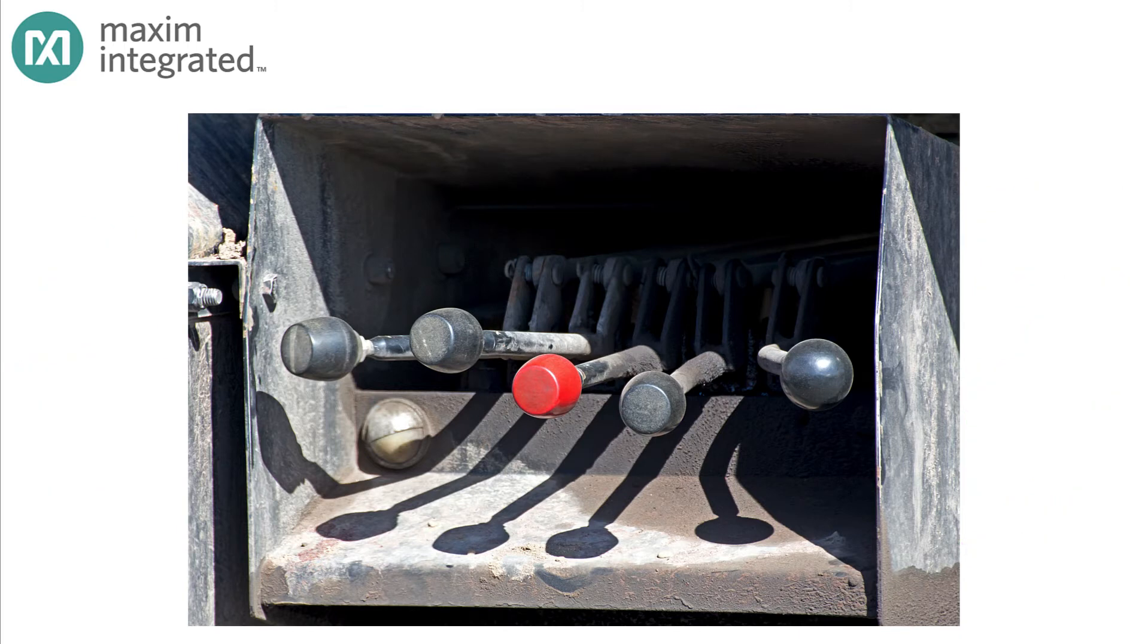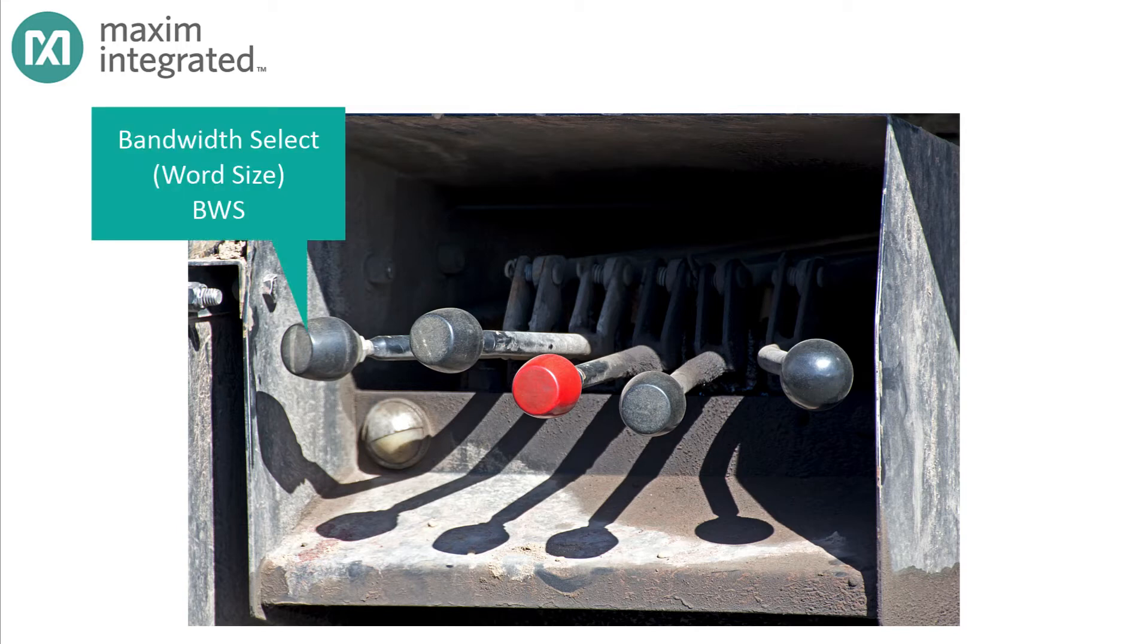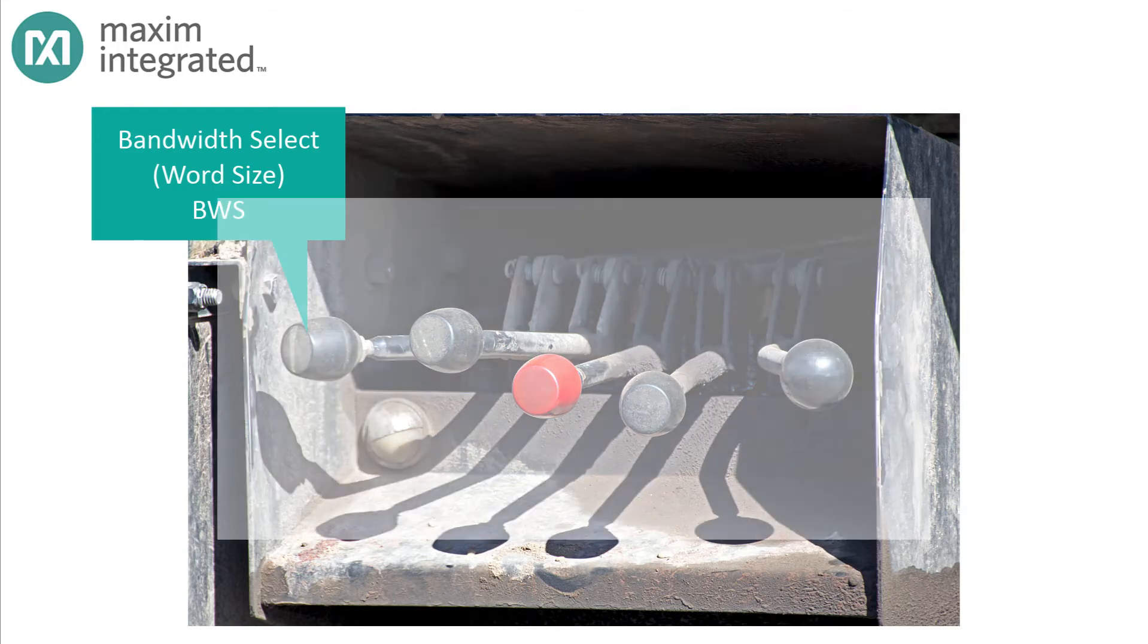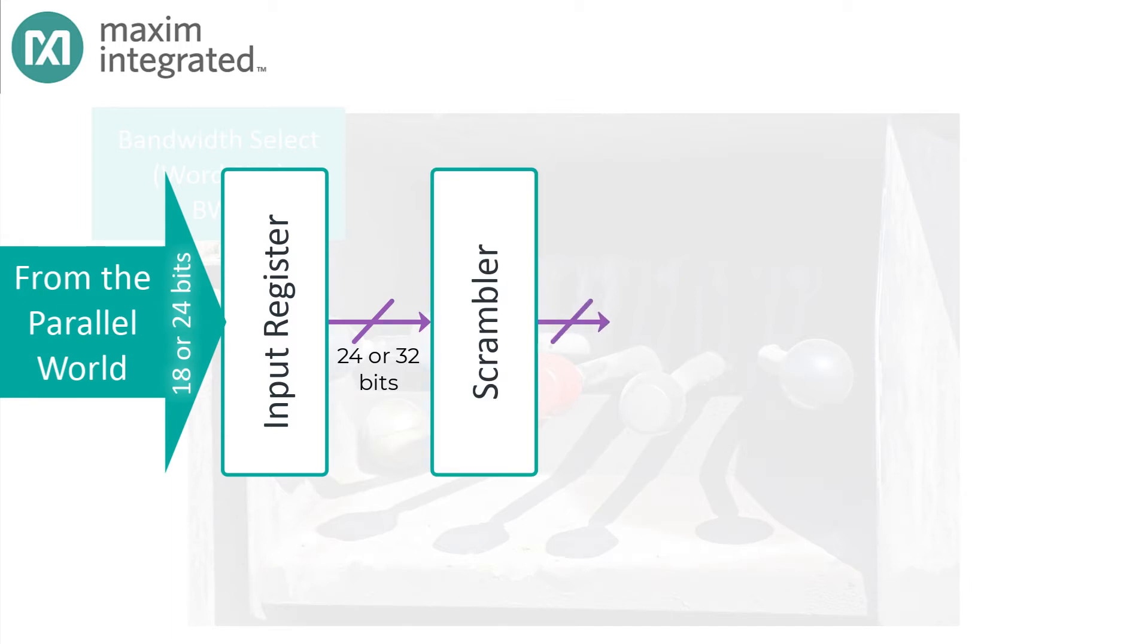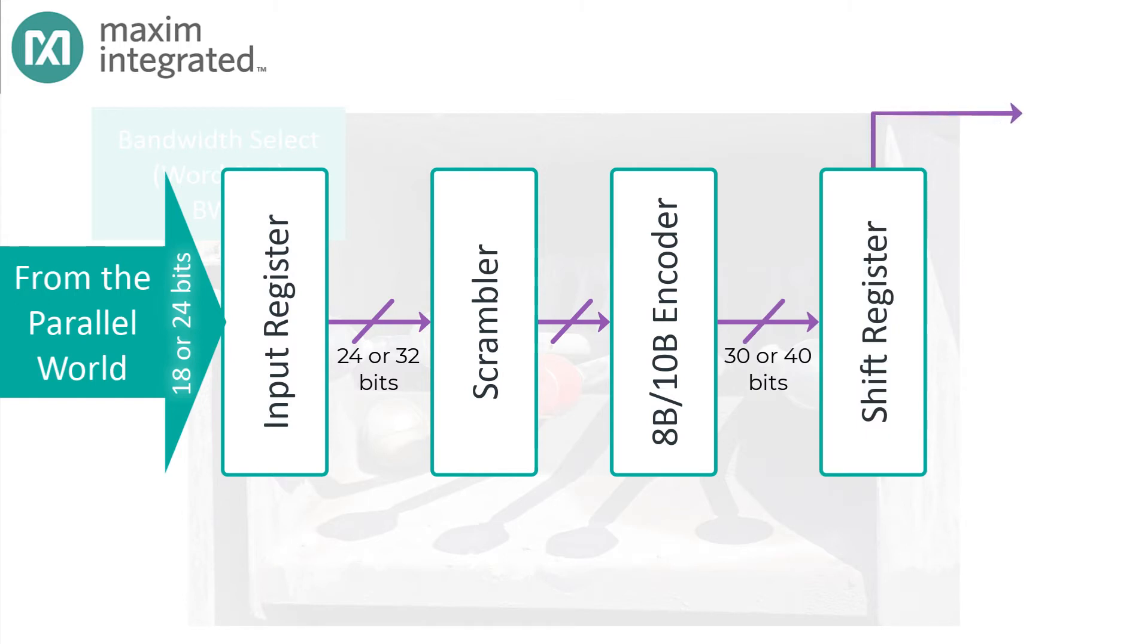The first lever is the word size. GMSL devices call this Bandwidth Select or BWS. Now, regardless of how many pins there are on the device, one way or another, the inputs get mapped into the parallel input register in some fashion. And generally, that parallel input register will be 24 bits wide or 32 bits wide. Those bus sizes map really nicely to the 8B-10B encoded result. 24 bits into the encoder gives you 30 bits out, and 32 bits into the encoder gives you 40 bits out. So, the input word is instantly translated to its 8B-10B equivalent, either 30 or 40 bits. Neat!